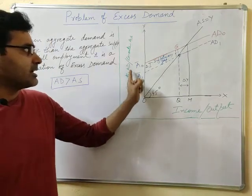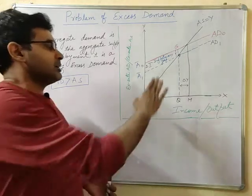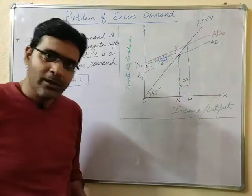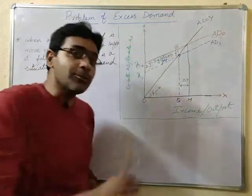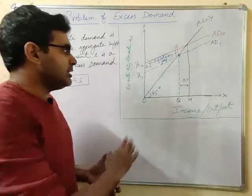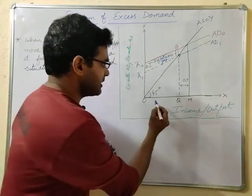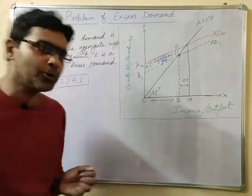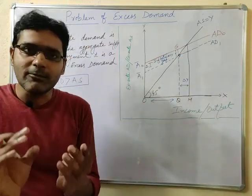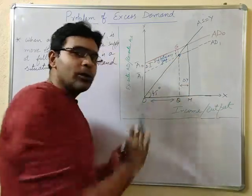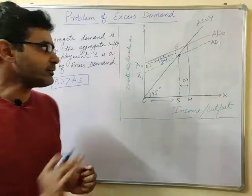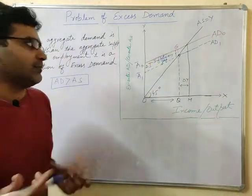From the diagram, income and output are measured on the OX axis, while aggregate demand and aggregate supply are measured on the OY axis. The economy is operating above the full employment level. Full employment equilibrium is at point F, and the initial aggregate demand curve is AD0. At full employment level, point F, the equilibrium output is OQ and the aggregate demand equals FQ, since point F lies on the 45-degree line — also known as the aggregate supply curve.